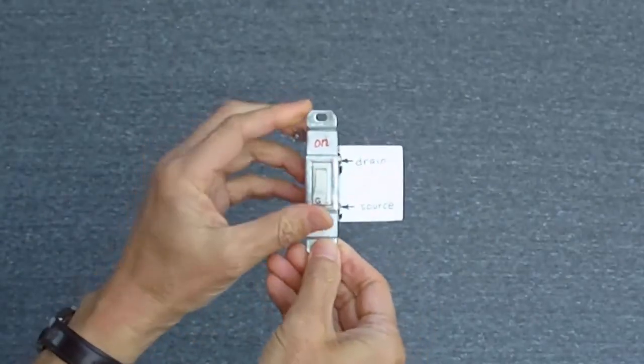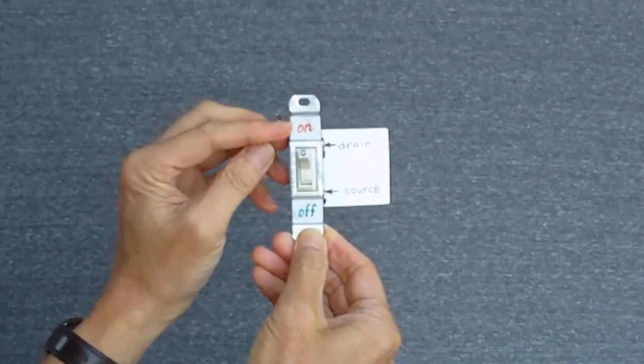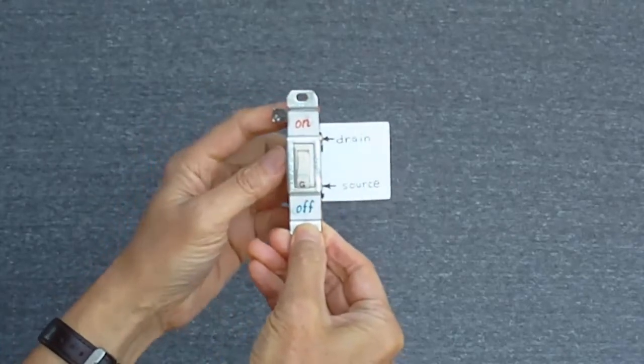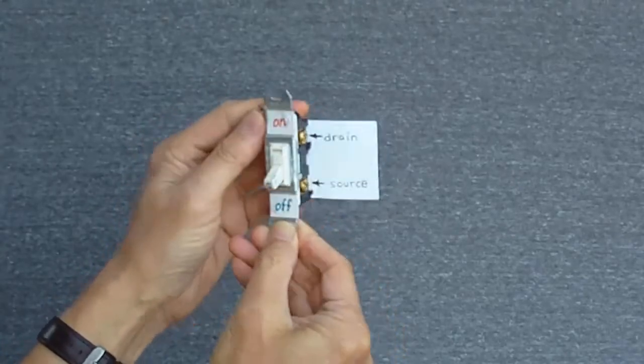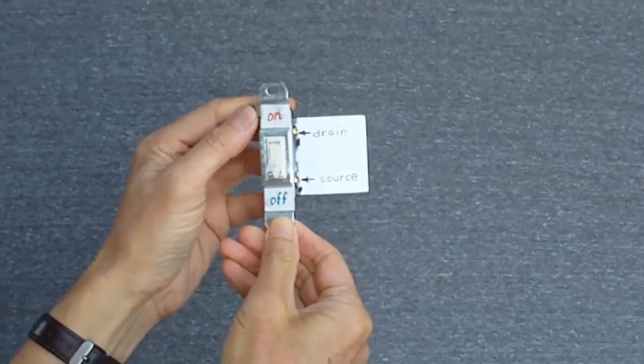When I apply a high voltage to the gate, which is like pushing the lever up, the source and drain terminals are connected. When I apply a low voltage by pushing the lever down, the source and drain terminals are disconnected. The control lever is insulated from the source and drain terminals.